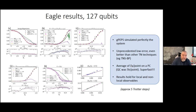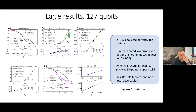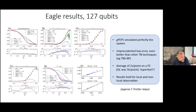To compare: the quantum processor took five hours per point, and the matrix product state results reportedly took more than 10 hours per point — so they were obviously not doing it correctly. The results held for local and non-local observables, giving us the first indication that the method works and we were going in the right direction.